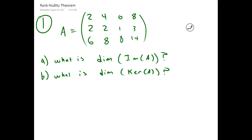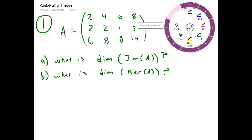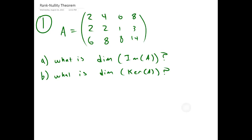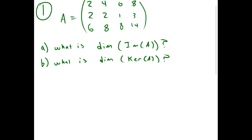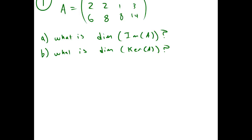Can you do some examples for the Rank-Nullity Theorem? So our first example has a matrix A, and we're asked to find the dimension of the image of A and the dimension of the kernel of A. We could just find the image and kernel and then look at their dimensions, but instead we're going to use some theorems. First, we're going to find the dimension of the image by putting this matrix in reduced row echelon form.